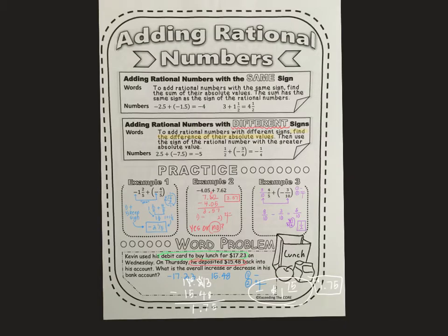Then we talked about adding rational numbers, and your yes/no flaps are still usable here. So adding same sign — this is where you add them and find the sum of their absolute values, then you keep the sign. Or actually, you add them and keep their sign. So if they're both positive or both negative, whichever sign the two numbers are, your answer is that sign.